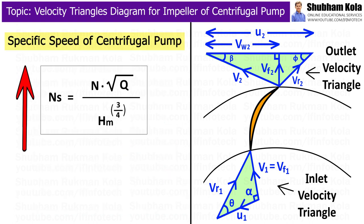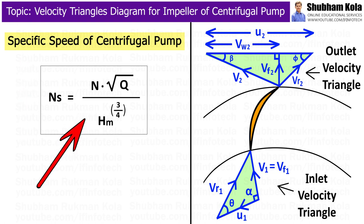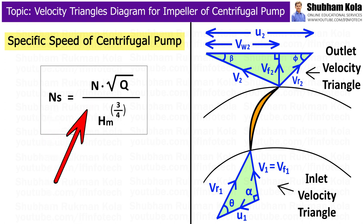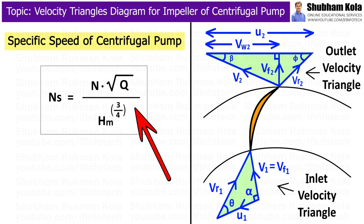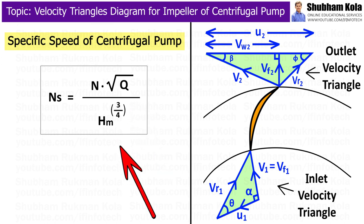The specific speed of a centrifugal pump is given by the formula: Ns = N × √Q / Hm^(3/4), where N is the rotational speed of the impeller, Q is the discharge rate, and Hm is the manometric head.